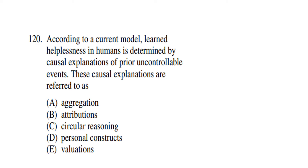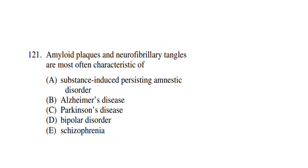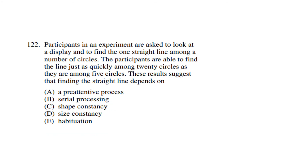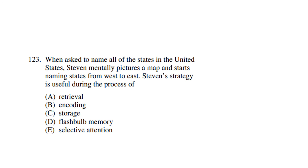Question 120: According to the current model, learned helplessness in humans is determined by causal explanations of prior uncontrollable events — these causal explanations are referred to as attributions. Question 121: Amyloid plaques and neurofibrillary tangles are most often characteristic of Alzheimer's disease. Question 122: Participants in an experiment are asked to find one straight line among a number of circles. They find the line just as quickly among 20 circles as among 5 circles. The results suggest that finding the straight line depends on a pre-attentive process.